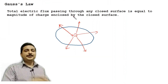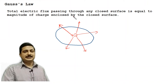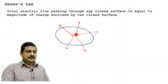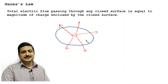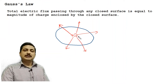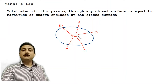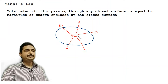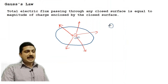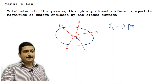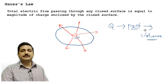Before knowing how to prove Gauss's law, you should properly understand what it is. Someone might ask: what is this Q? Can Q always be a point charge? Can this Q represent a line charge, a surface charge, or a volume charge? Yes, exactly — this Q inside the closed surface can be any charge, from point charge to volume charge.